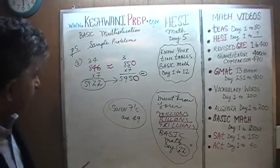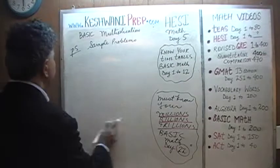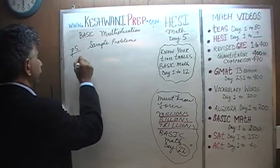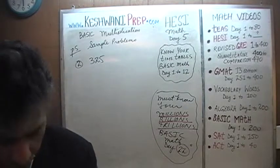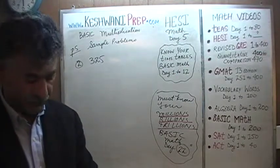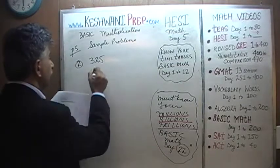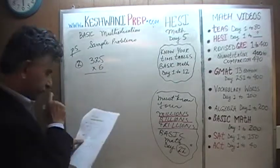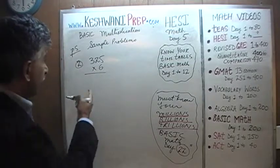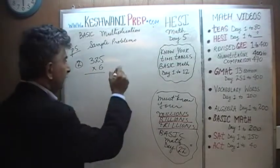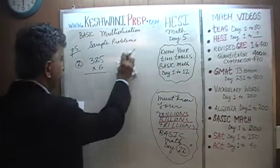Number 2 is 325 times 6. If you are hell-bent on doing this properly the long way, it will take you forever. Instead, just break it up into manageable parts.